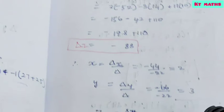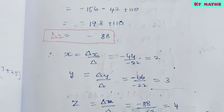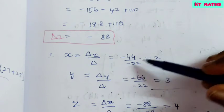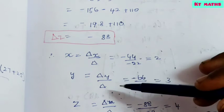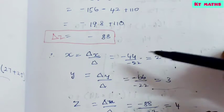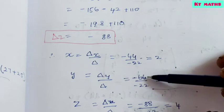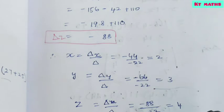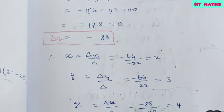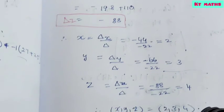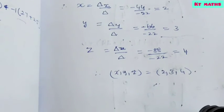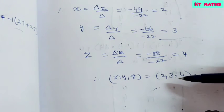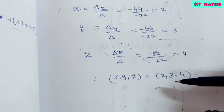Now solving: x = Δx / Δ = −44 / −22 = 2; y = Δy / Δ = −66 / −22 = 3; z = Δz / Δ = −88 / −22 = 4. So the answers are x = 2, y = 3, z = 4.